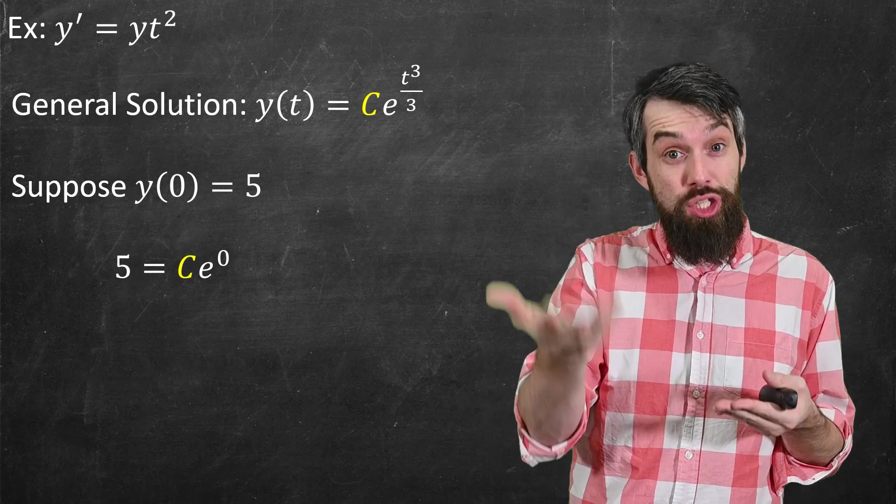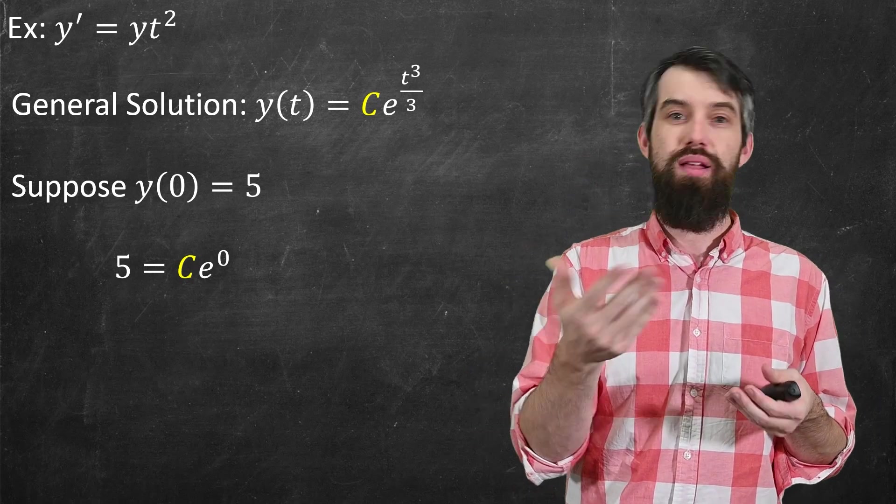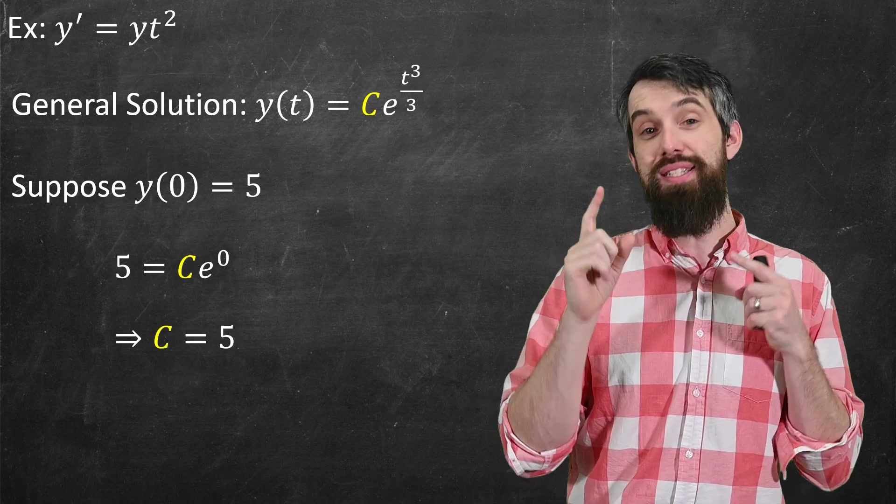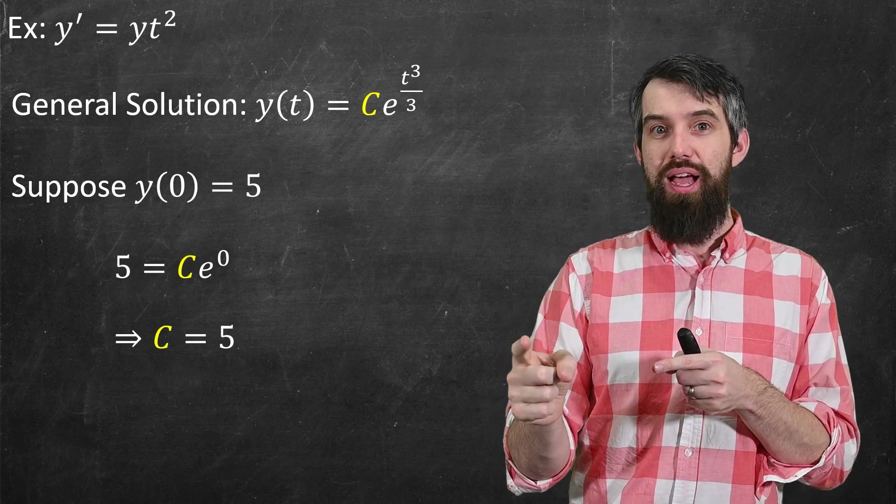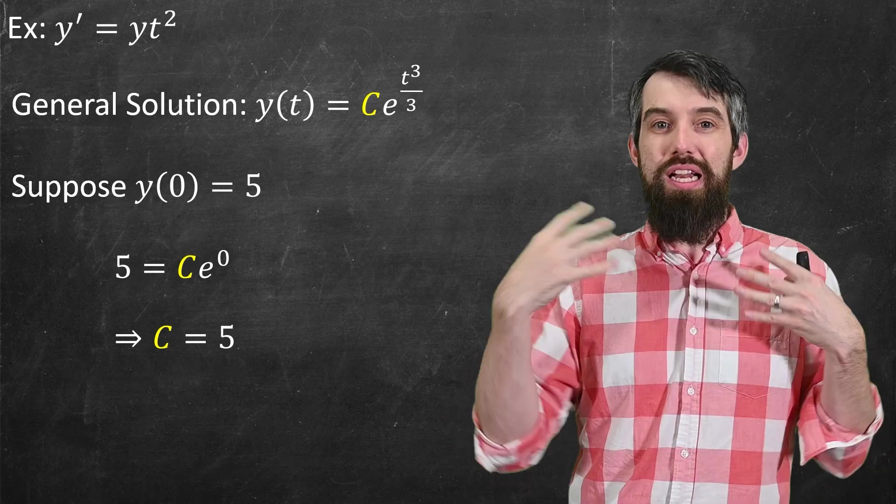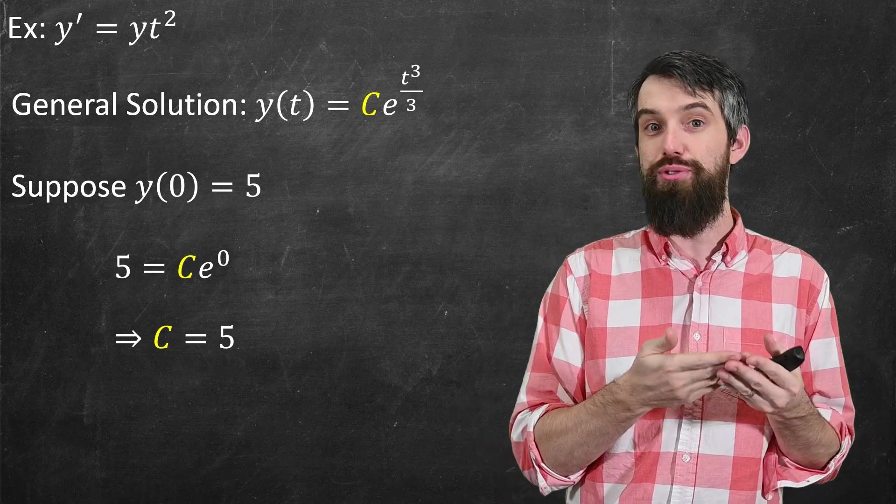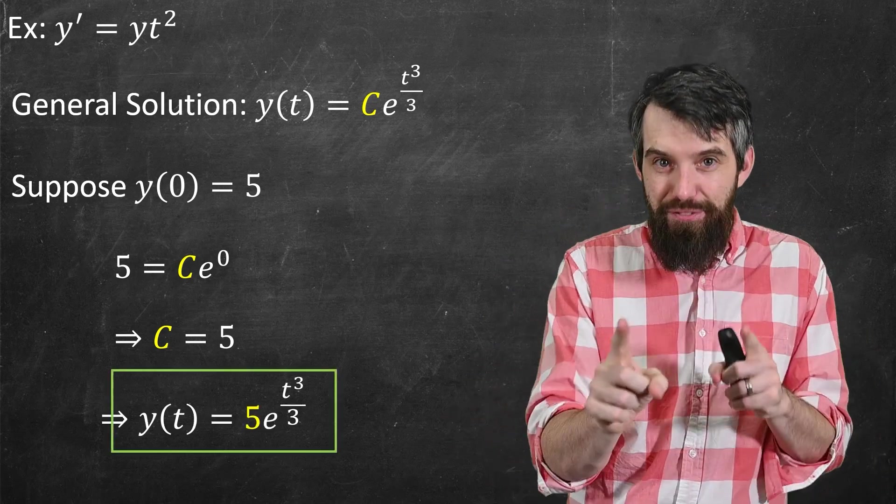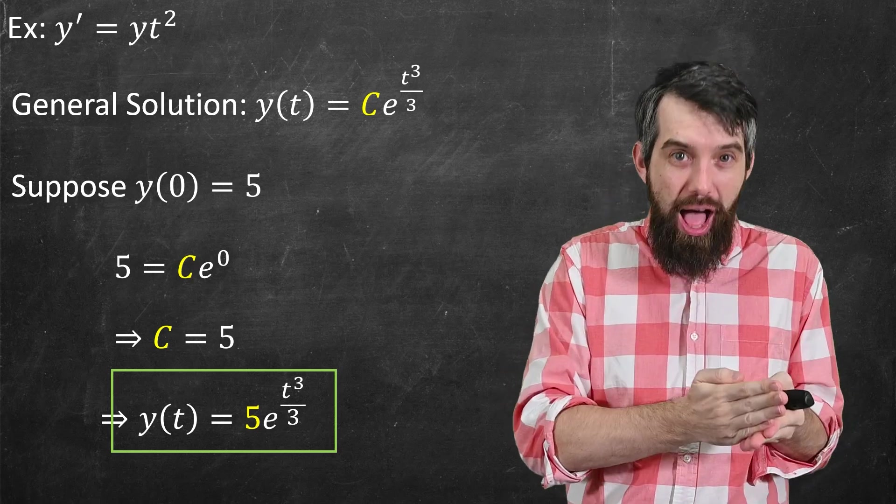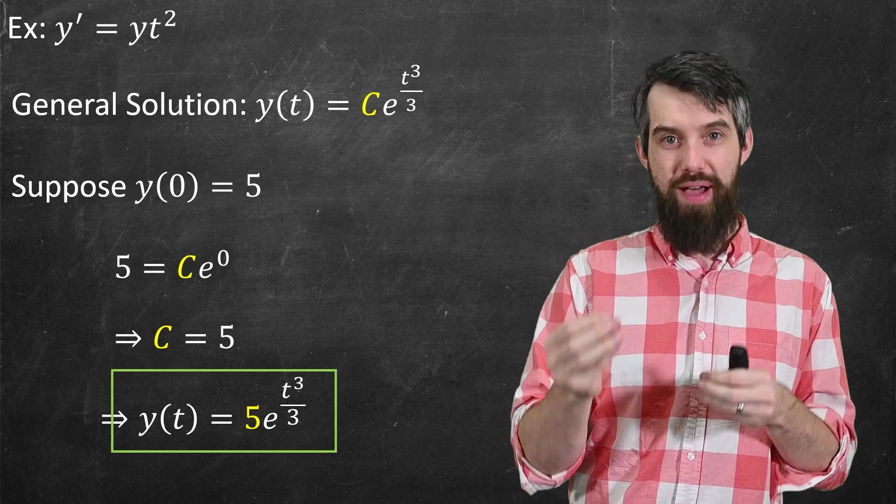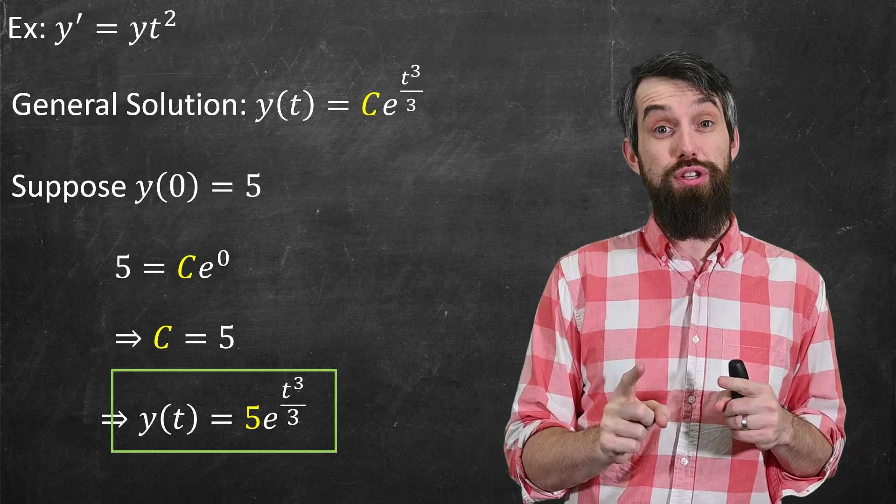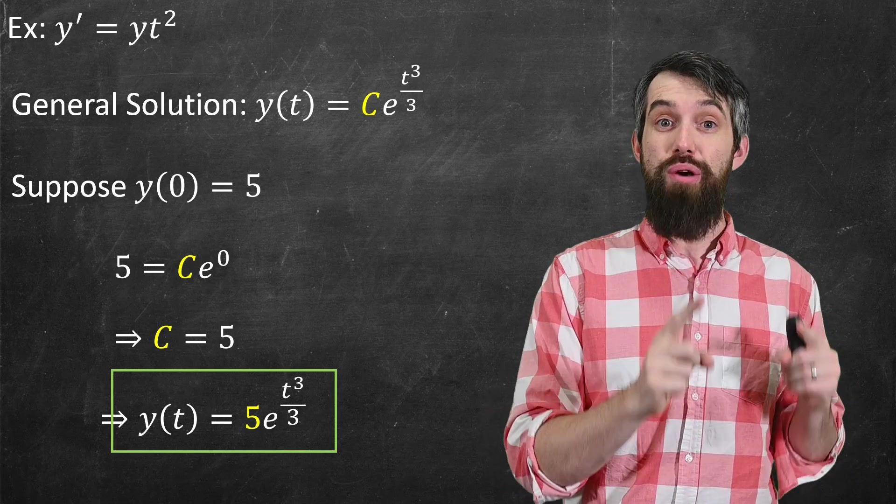Well, I could plug this in. So that would be 5 on the left-hand side, equal to a constant e to the 0, if I plug in t equal to 0. e to the 0 is 1, and so I get that c was equal to 5. And this lets me rewrite what was originally a general condition with an arbitrary constant. I now get a very specific answer. y of t is 5e to the t cubed divided by 3.